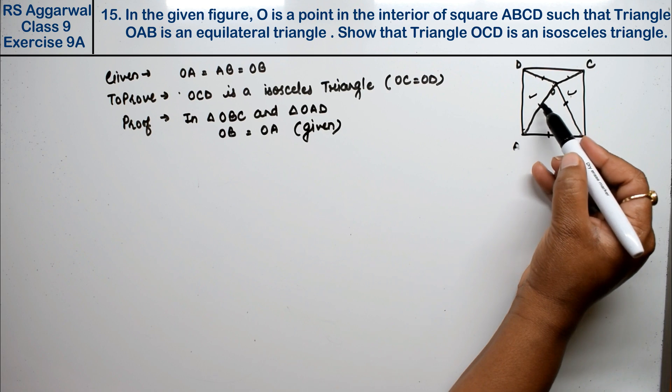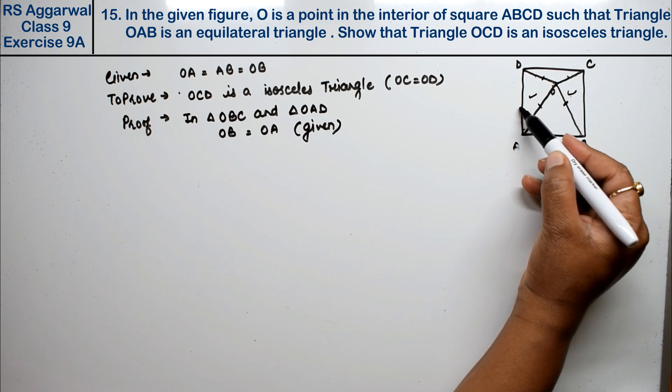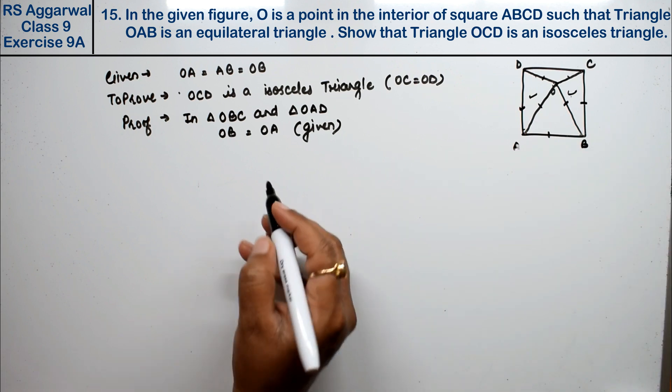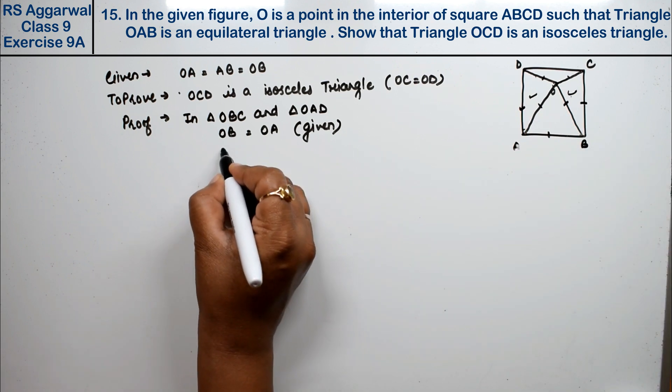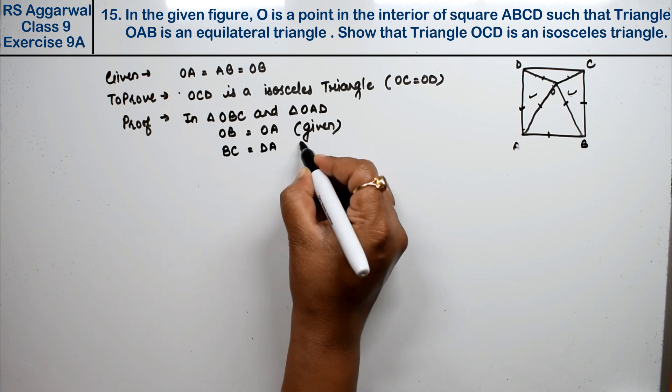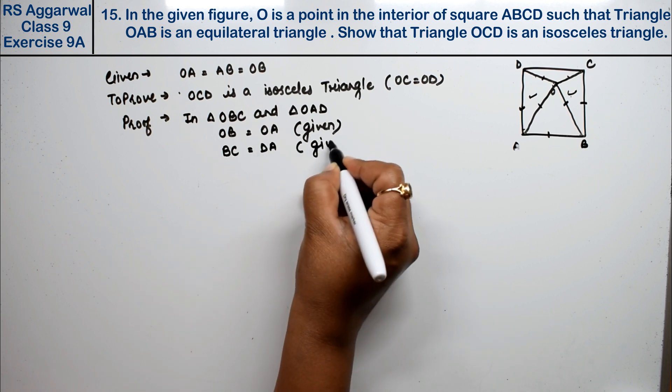Next, BC equals DA because all four sides of the square are equal. This is also given.